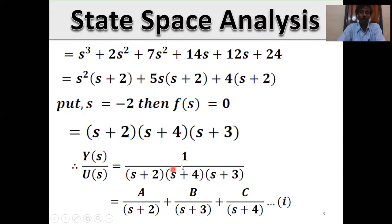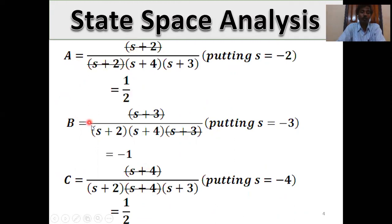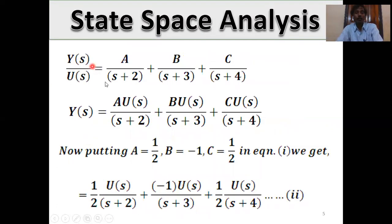Put the partial fraction form as A/(s + 2) + B/(s + 3) + C/(s + 4). This is equation number one. First calculate A, B, and C. A equals — multiply (s + 2), cancel, and we get A = 1/2. B = −1 and C = 1/2. You can calculate using any method.